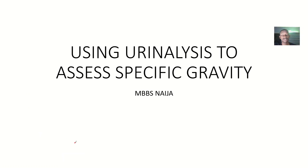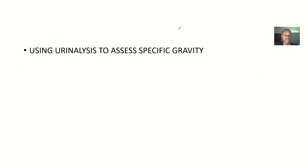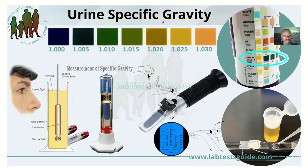You can use urinalysis to actually assess the specific gravity of a urine sample. That's what we'll be looking at as we traverse this video. I'll be talking about how we can use urinalysis to access specific gravity. Urinalysis uses a hydrometer — there's mercury in this hydrometer — and specific gravity is linked to the amount of solutes that are actually in urine.